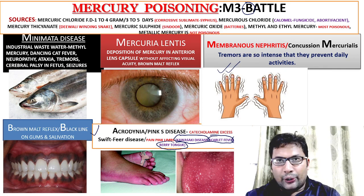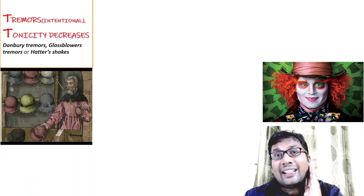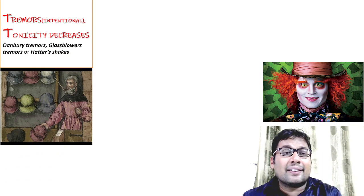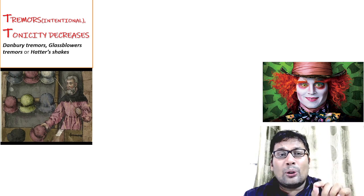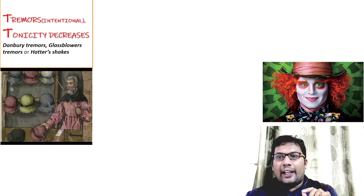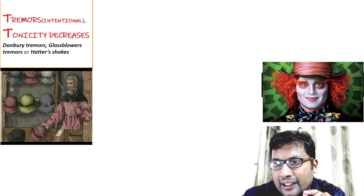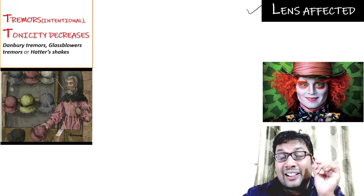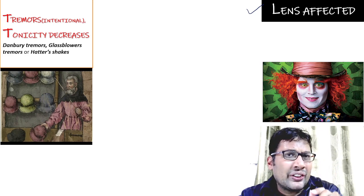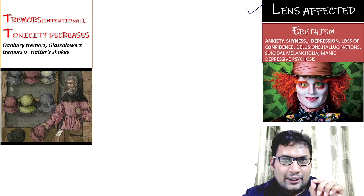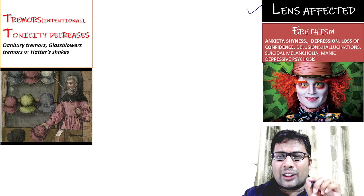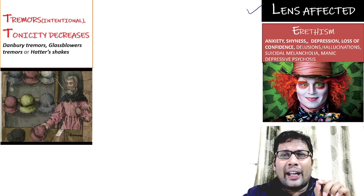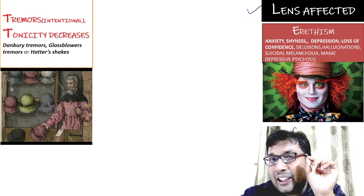T, T, L, E is the remainder of the mnemonic. T is for tremors — intentional tremors, also known as Danbury tremors or glass blower's tremors or Hatter's shake. Tonicity also decreases. L — the lens is affected. E is for erythrism — extreme degree of shyness, delusions, and hallucinations. Features include anxiety, shyness, depression, loss of confidence, delusions, hallucinations, suicidal tendency, melancholia, and manic-depressive psychosis. All are features of erythrism seen in mercury poisoning. So the full mnemonic is M3 Battle.